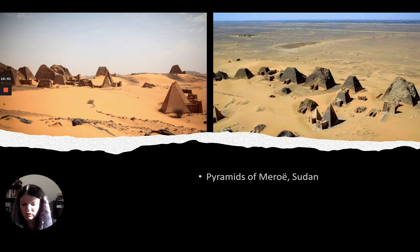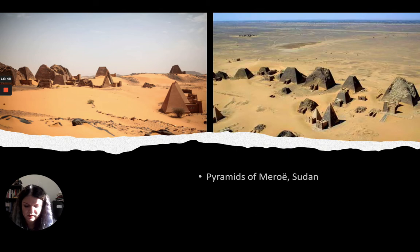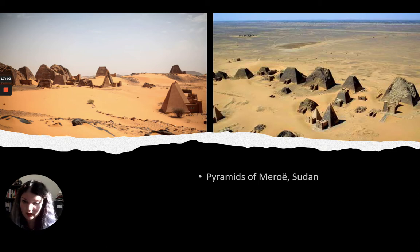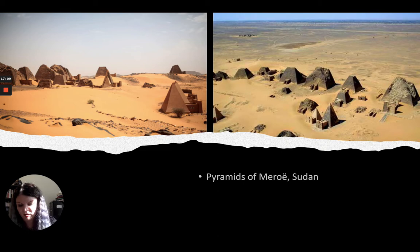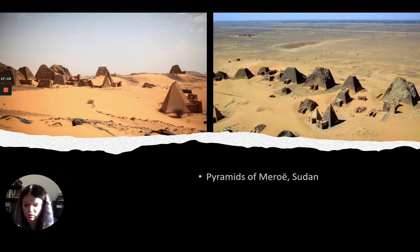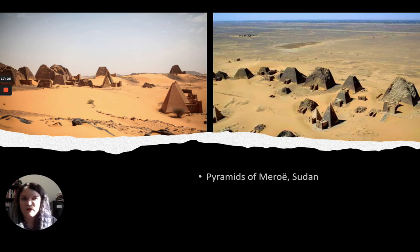After their defeat, the Kushites return to Napata. Then at the beginning of the 6th century BC, Psamtek the Second — P-S-A-M-T-E-K — Egypt's new pharaoh, comes down and attacks Napata — basically a revenge attack. The Kushites then relocate their capital again. It was originally Kerma, then Napata, and then they relocate to Meroe. Meroe becomes their new center and a very important cultural location for the Kushites for the remainder of their reign.